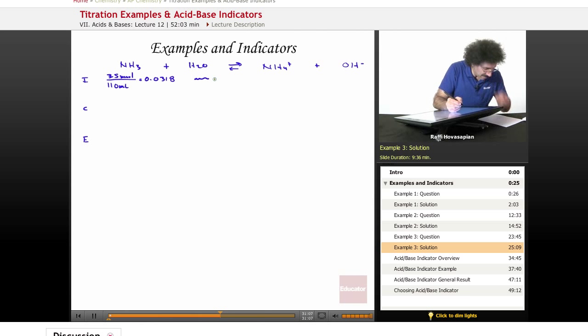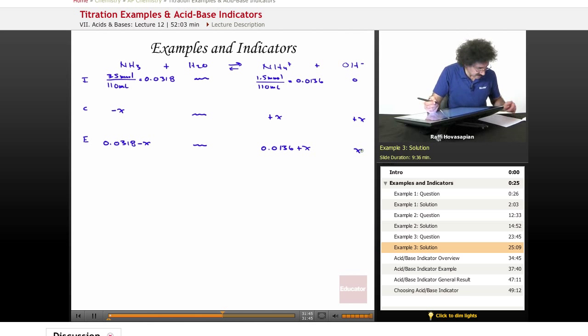The NH4+ is 1.5 millimoles floating around in 110 milliliters. That's equal to 0.0136. There's no hydroxide left. This is going to diminish a little bit. Water doesn't matter. This is going to show up. This is going to show up. We end up with 0.0318 minus X. Water doesn't matter. 0.0136 plus X and X.